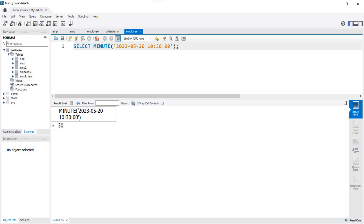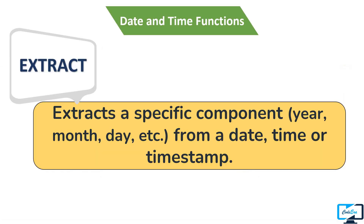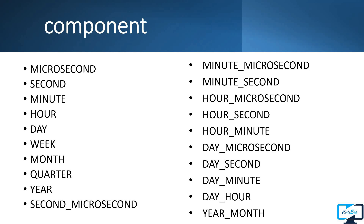We recently discussed these six functions, but there is an alternate function you can use instead of all of them — the EXTRACT function. The EXTRACT function returns a specific component from a date, time, or datetime expression, such as year, day, hours, and so on. The syntax requires passing a component as a parameter, then the keyword FROM, followed by the datetime expression. You can extract any available component by writing the appropriate keyword in place of the component.